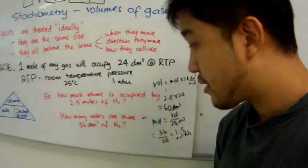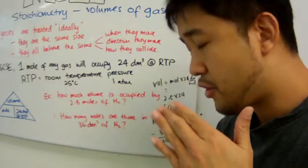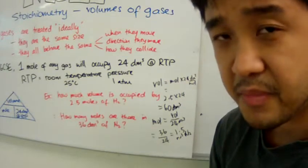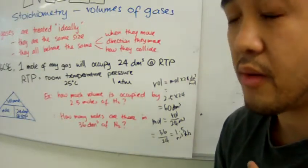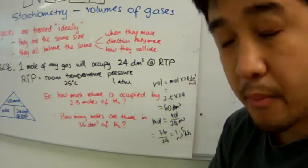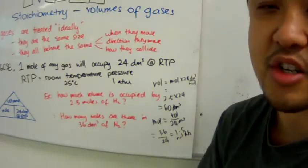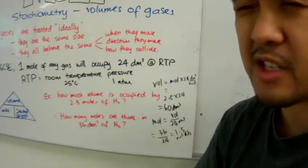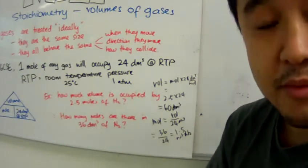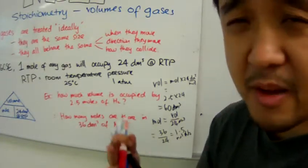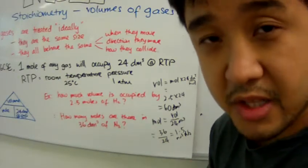So, at 36 cubic decimetres in RTP, the amount of moles of nitrogen that we can find in that space will be 1.5 moles of nitrogen. What if we change it to oxygen? It doesn't matter. It will still be 1.5 moles of oxygen. What if we use methane? It does not matter. It will still be 1.5 moles of methane.